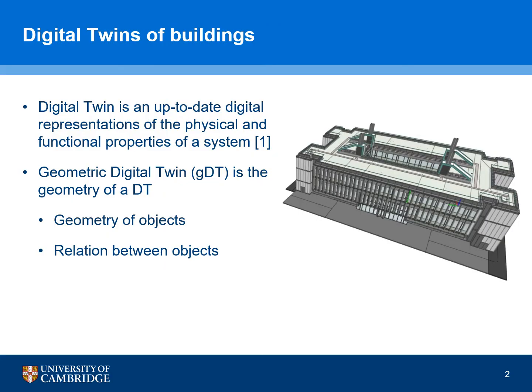To begin with, let's first define what we actually mean by geometric digital twin. We adopt the SAX definition of a digital twin — a digital replica of a physical building — and the main part of this is it has to represent the properties of the building itself. By geometric digital twin, we mean a set of objects together with their geometry as well as relations between these objects.